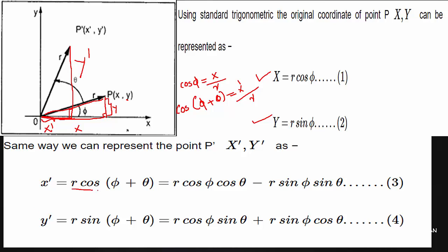X' equals R cos(5 plus theta). We define y' as R sin(5 plus theta). Expanding these: x' equals R cos5 cosθ minus R sin5 sinθ, and y' equals R cos5 sinθ plus R sin5 cosθ. This is the trigonometric expansion.